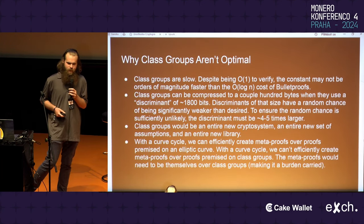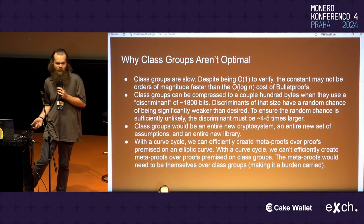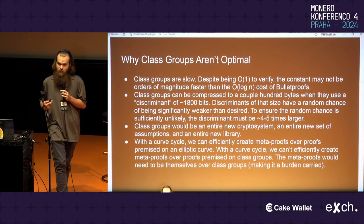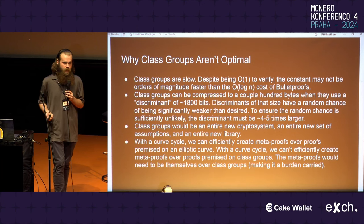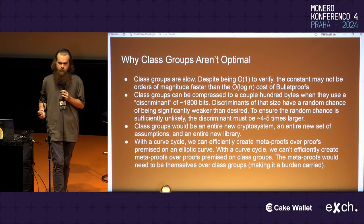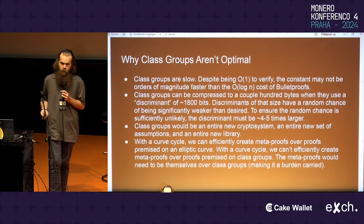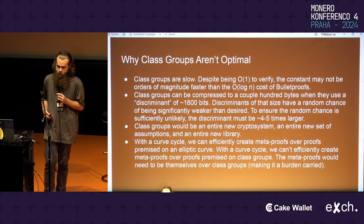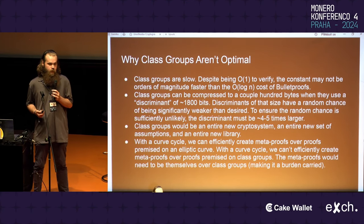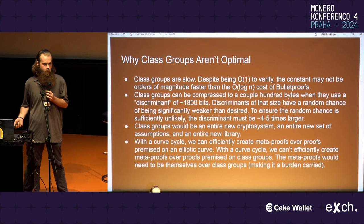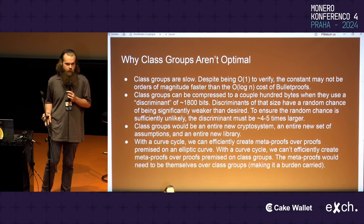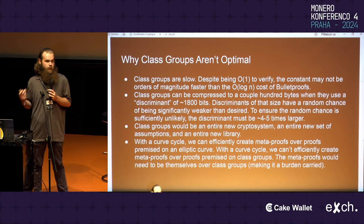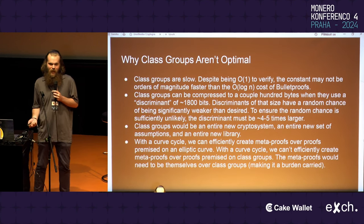From there, it breaks down pretty fast. Despite being O(1) to verify, we're already achieving logarithmic verification with bulletproofs just because we're encoding a logarithmic program. And it would still be much slower than the bulletproof-based proof in practice. It would still be notably smaller, except class groups have a really interesting property.